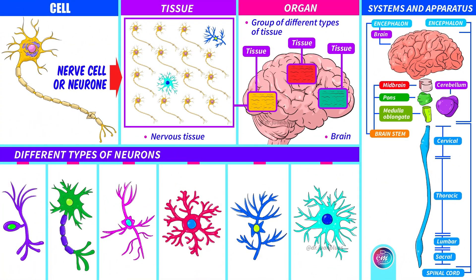Here we have a cell which ended up specialising in generating and conducting electrical impulses. We call it a nerve cell or neuron. There are different types of neurons, but they all have common group characteristics. And when these different nerve cells group together to perform a collective task, they form tissue. In this case, nervous tissue.